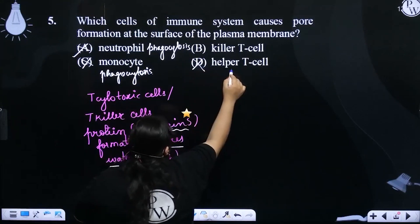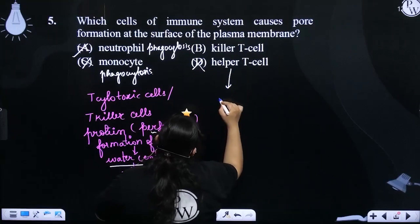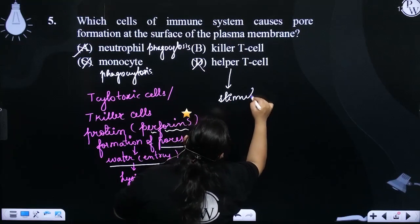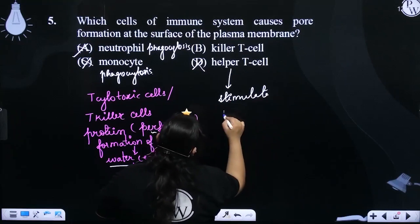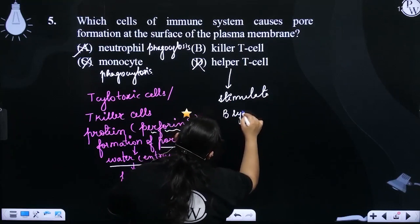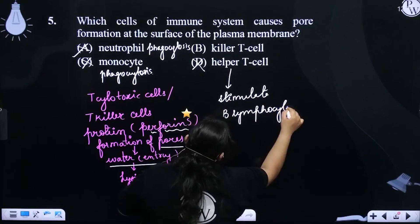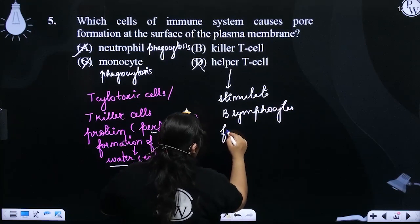Helper cells kishko activate karke? Helper cells, they stimulate B cells for antibody formation.